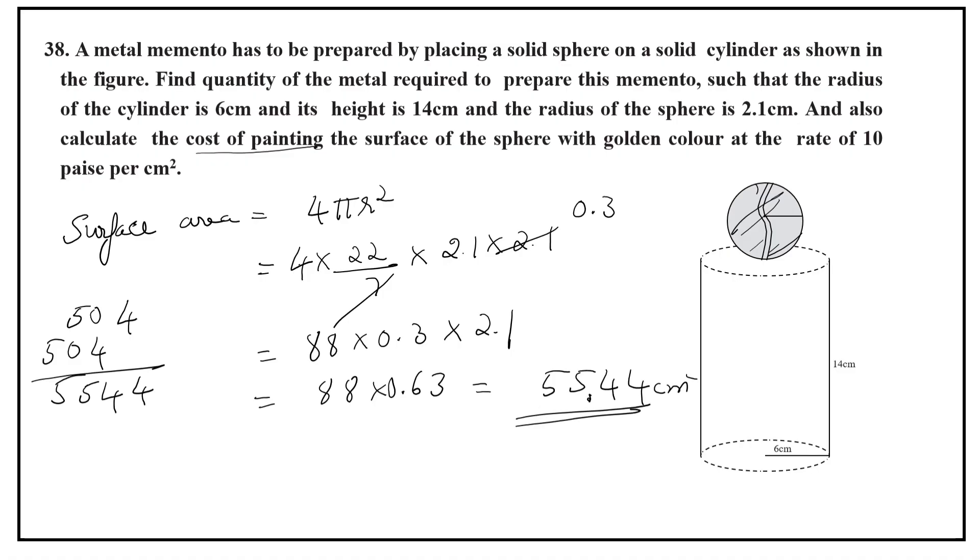For 1 centimeter square area, 10 paise. For this much, how much paisas? 55.44 times 10 equals 554.4 paisas. But let us now convert it into rupees.